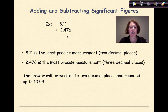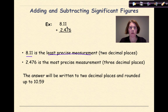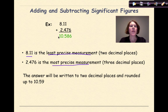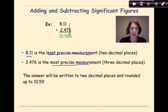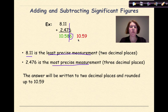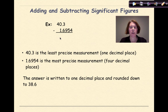Let's look at this example: 8.11 plus 2.476. The 8.11 is the least precise measurement because it only goes out two decimal places. If we put it into our calculator, we'd get 10.586. We can only go out two decimal places, so we look at the six and round up. Our final answer is 10.59, because our least precise measurement only goes out two decimal places.